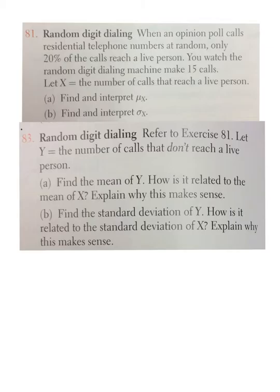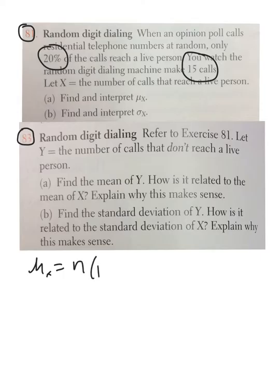Okay, on 83, we have to look back at 81. It's not so bad. You're polling people by telephone. You only have a 20% chance of reaching a live person, and you make 15 calls. Well, what would you expect to have happen? So, expected value, or the mean, of X is going to be the number in your sample times the probability, which is going to be 15 times 0.2, which gives you 3.